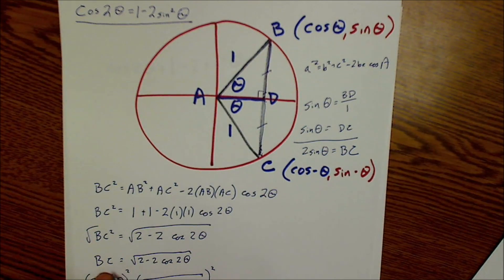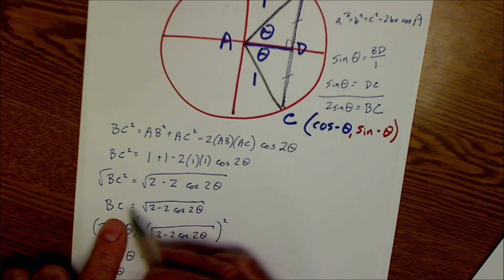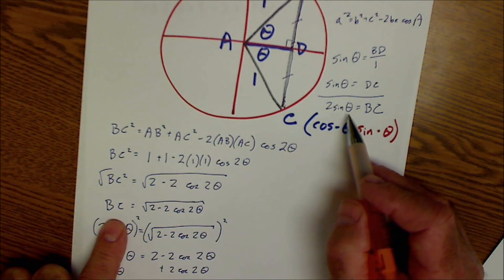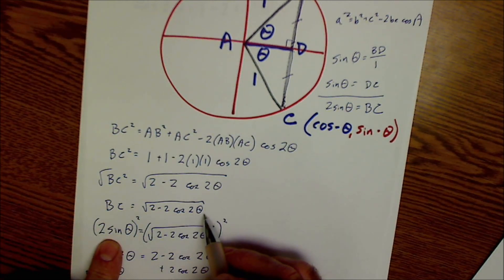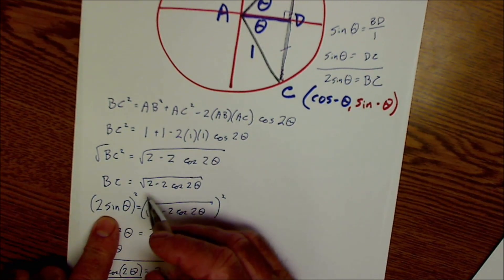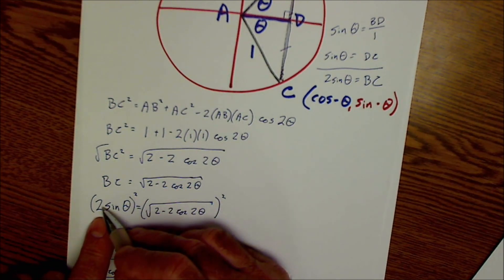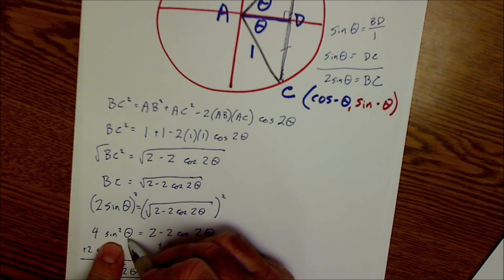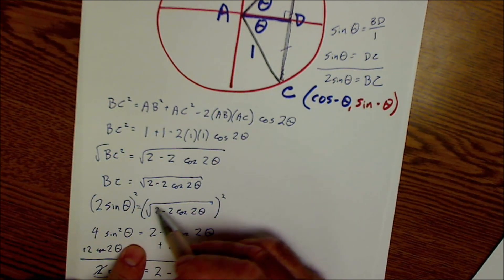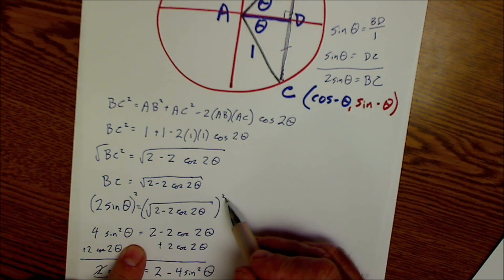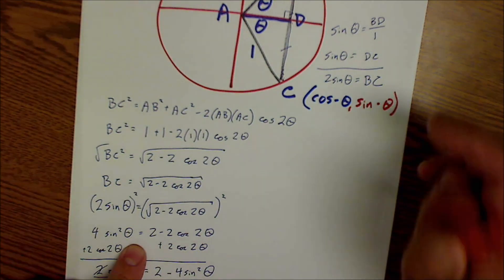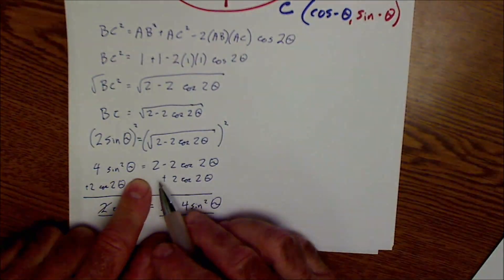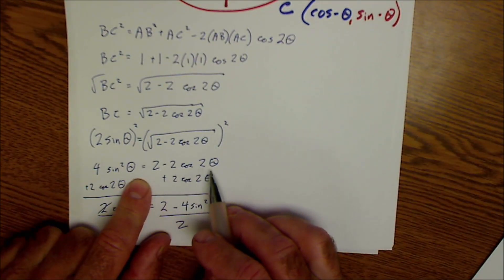I'm going to replace bc with 2 sine of θ, so 2 sine of θ equals √(2 − 2·cos(2θ)). My next step is to square both sides of the equation. 2 squared gives me 4 sine squared of θ, and squaring removes the square root. So now I have 4 sin²θ = 2 − 2·cos(2θ).